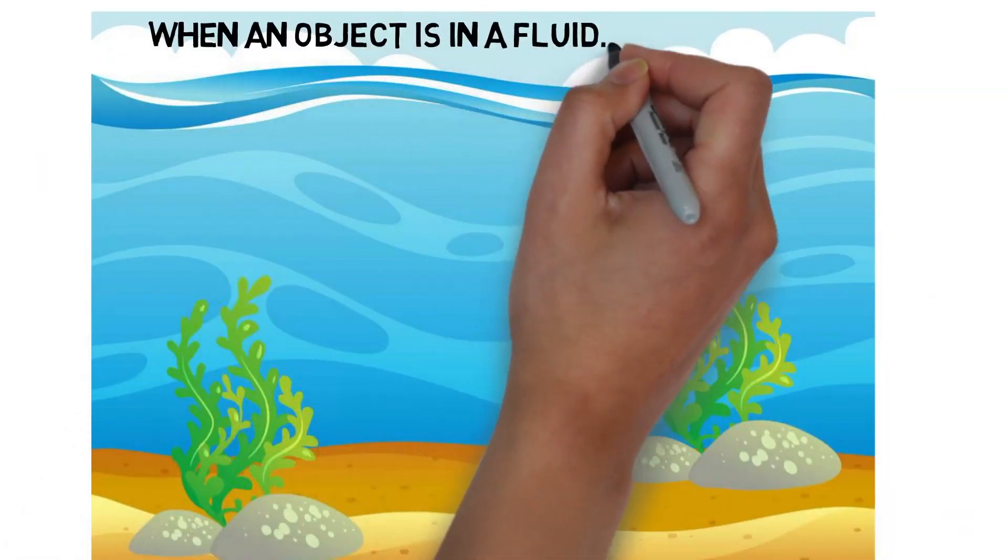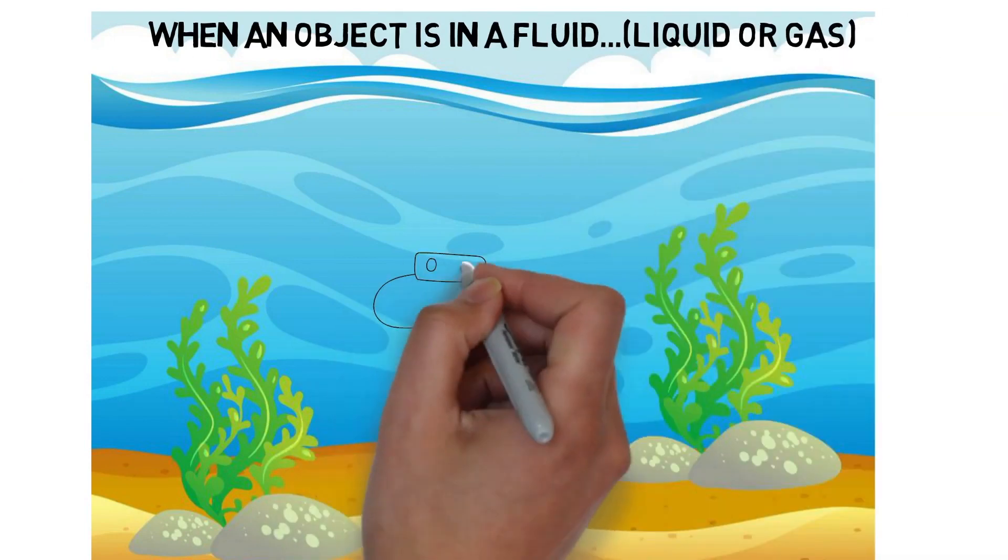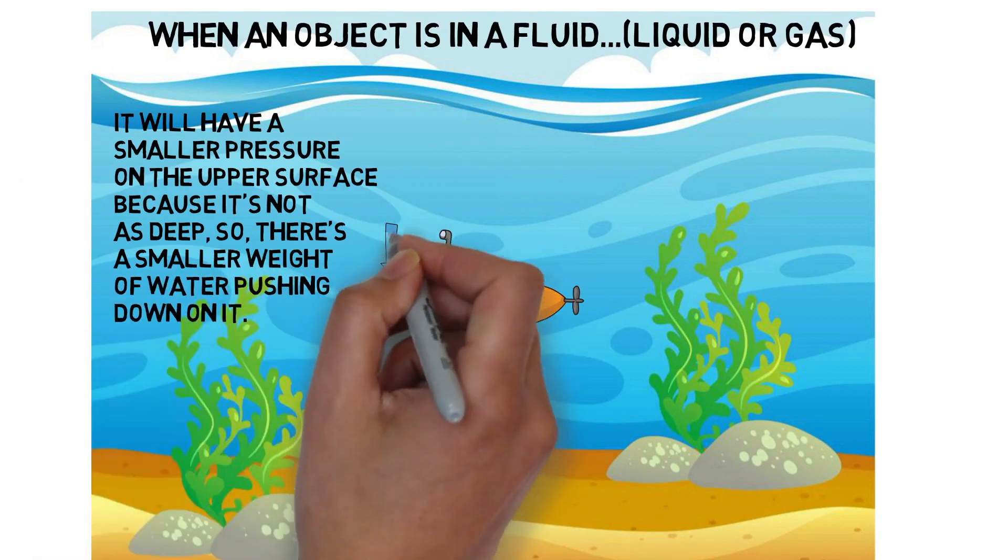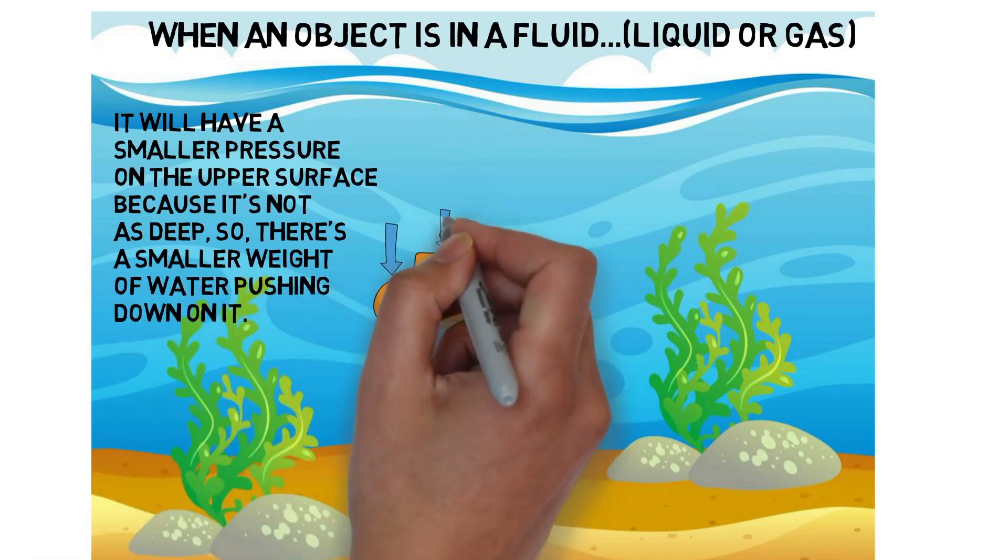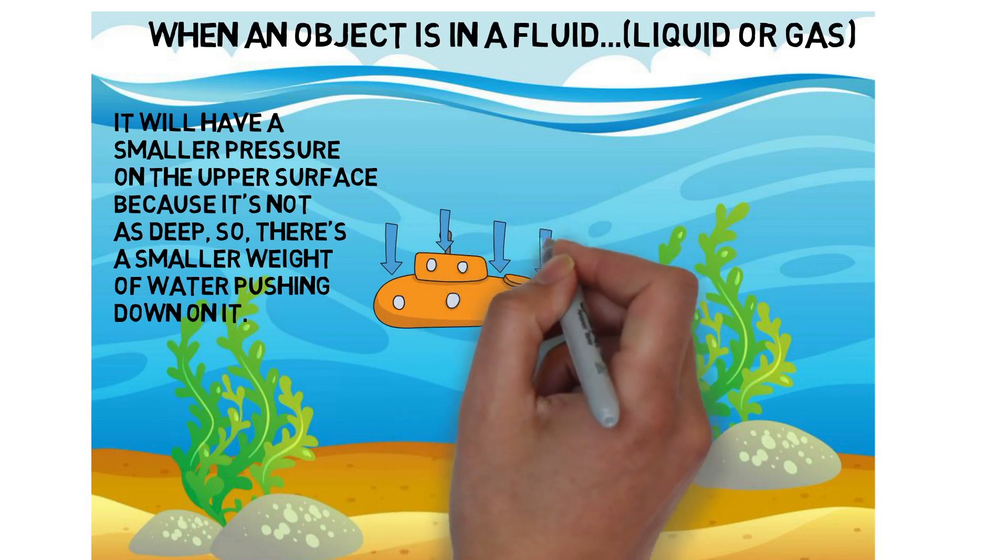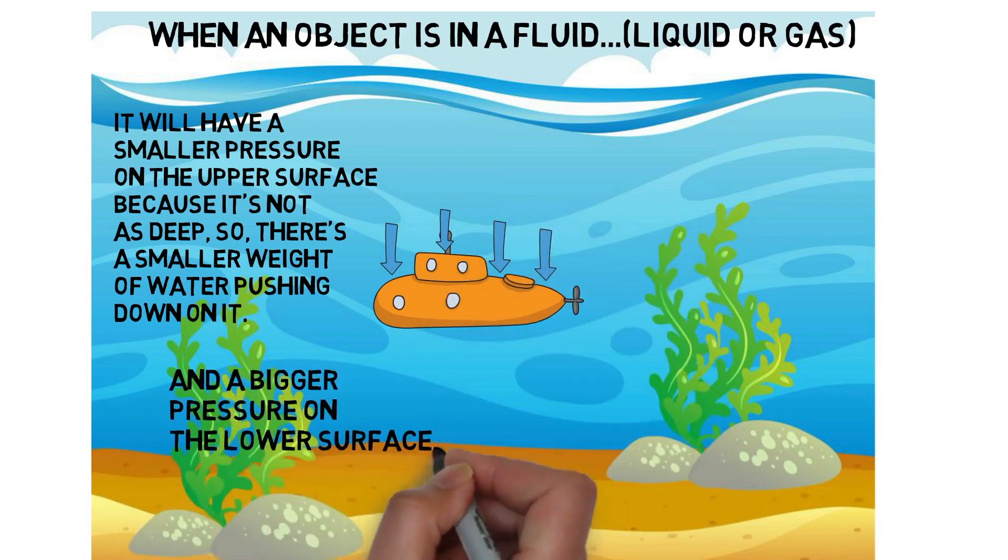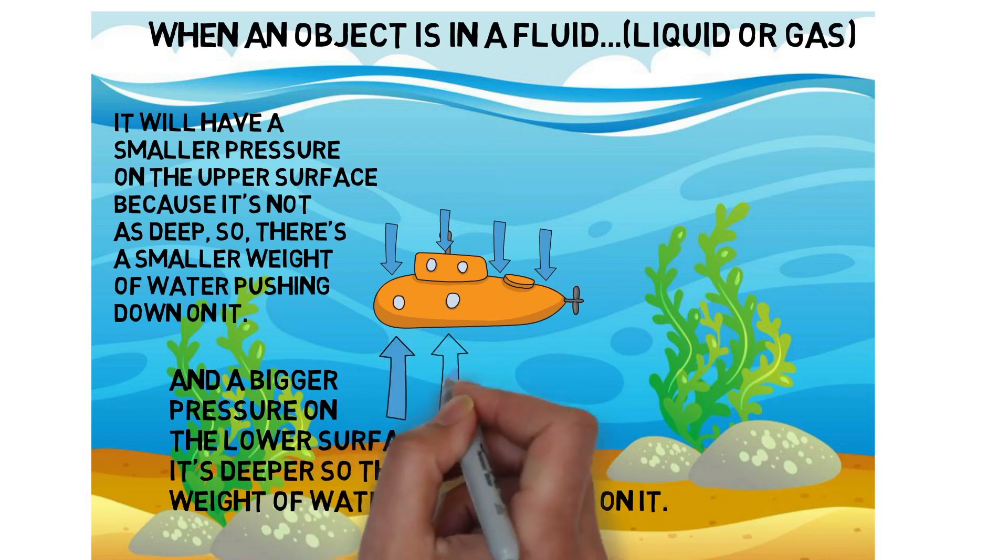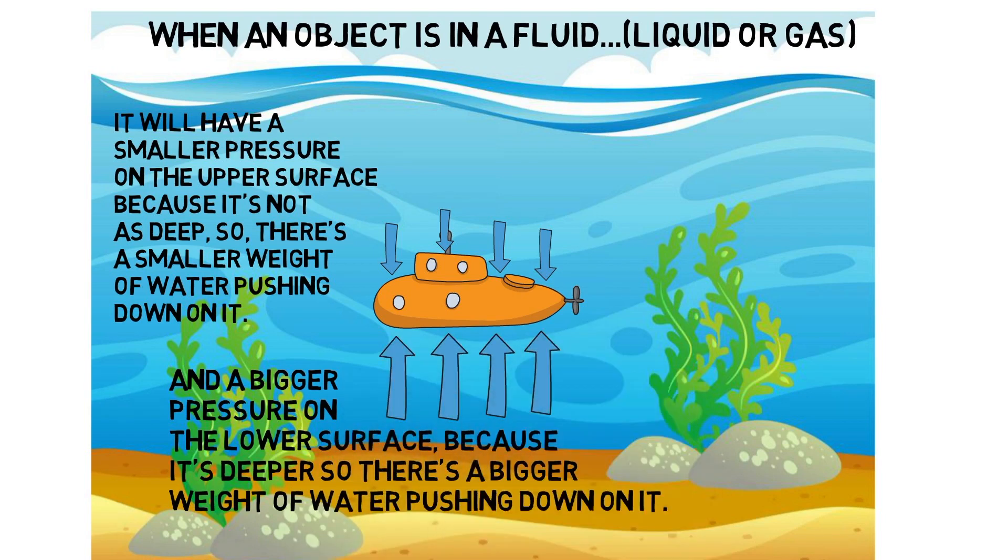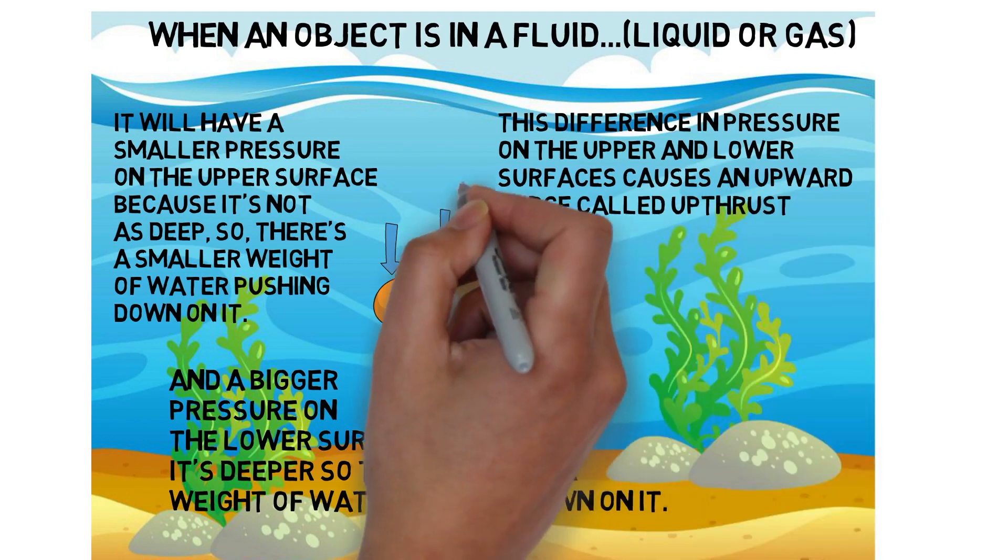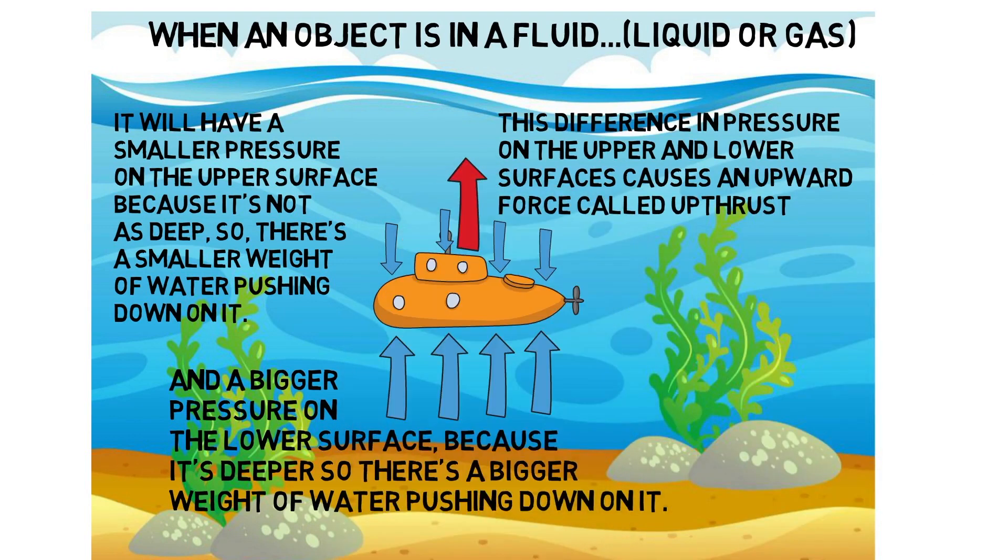When an object is in a fluid or gas, it will have a smaller pressure on the upper surface because it's not as deep, so there's a smaller weight of water pushing down on it, and a bigger pressure on the lower surface because it's deeper, so there's a bigger weight of water pushing down on it. This difference in pressure on the upper and lower surfaces causes an upward force called upthrust.